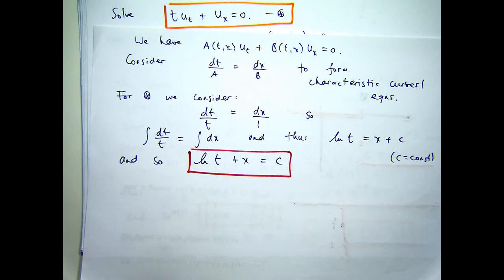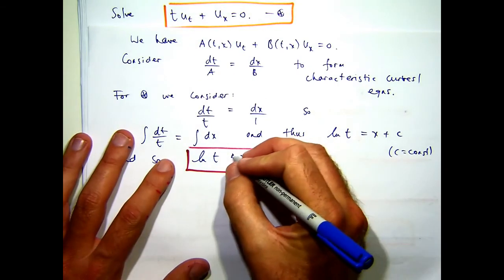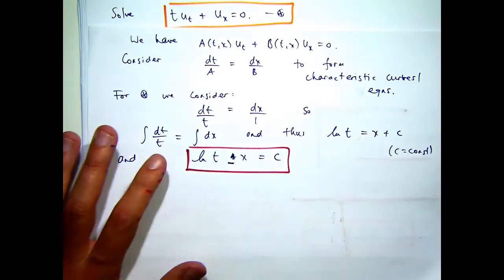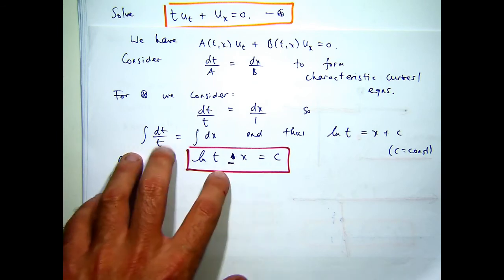These, then, are your characteristic type equations, but they're different. They're different from the previous slide. Sorry, it should be a minus, right? Let me adjust that. Sorry, that should be a minus there. Log T minus X equals a constant.